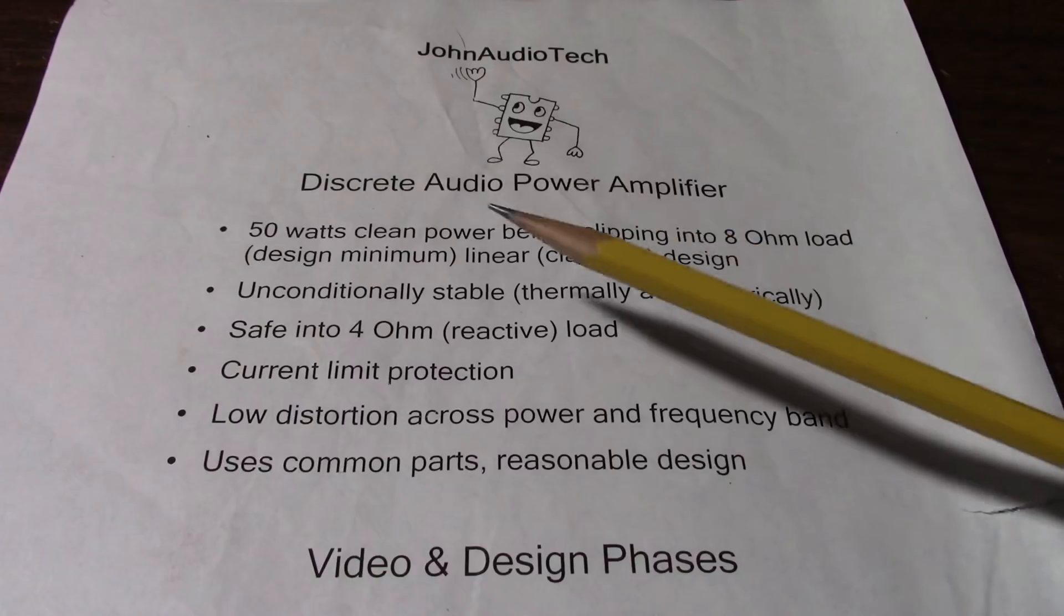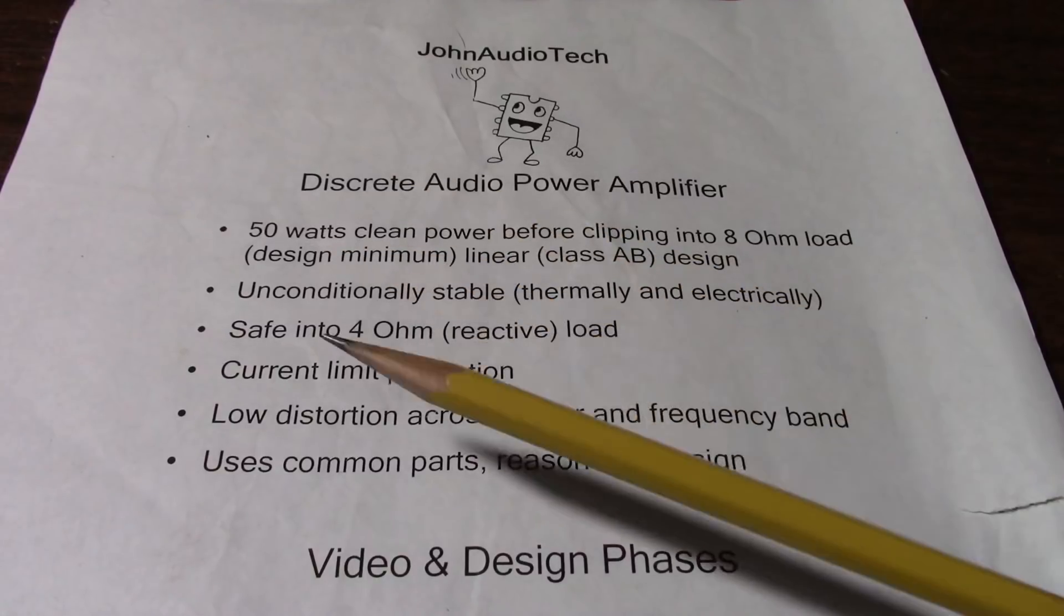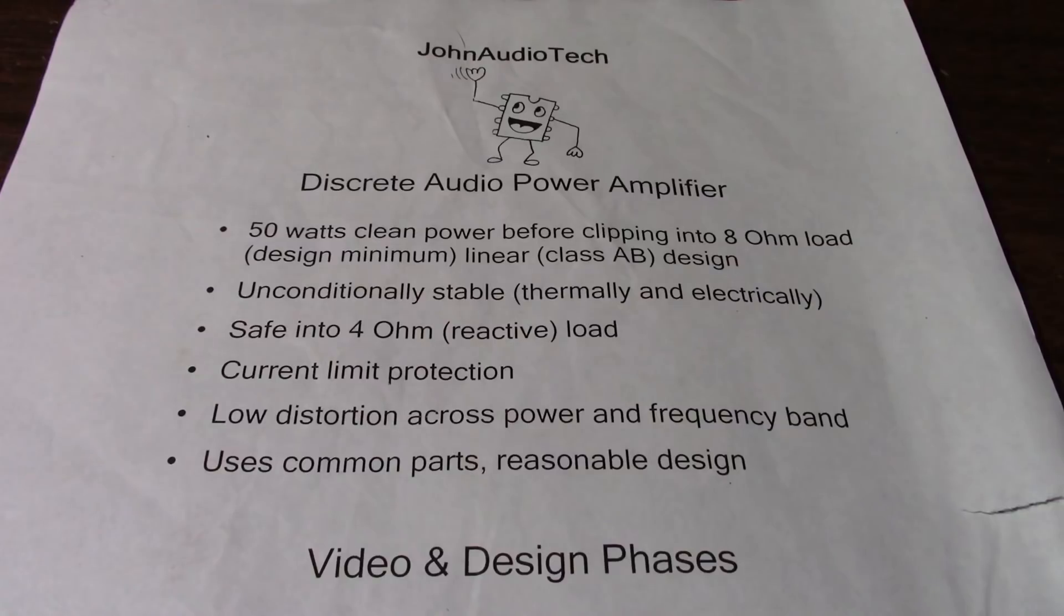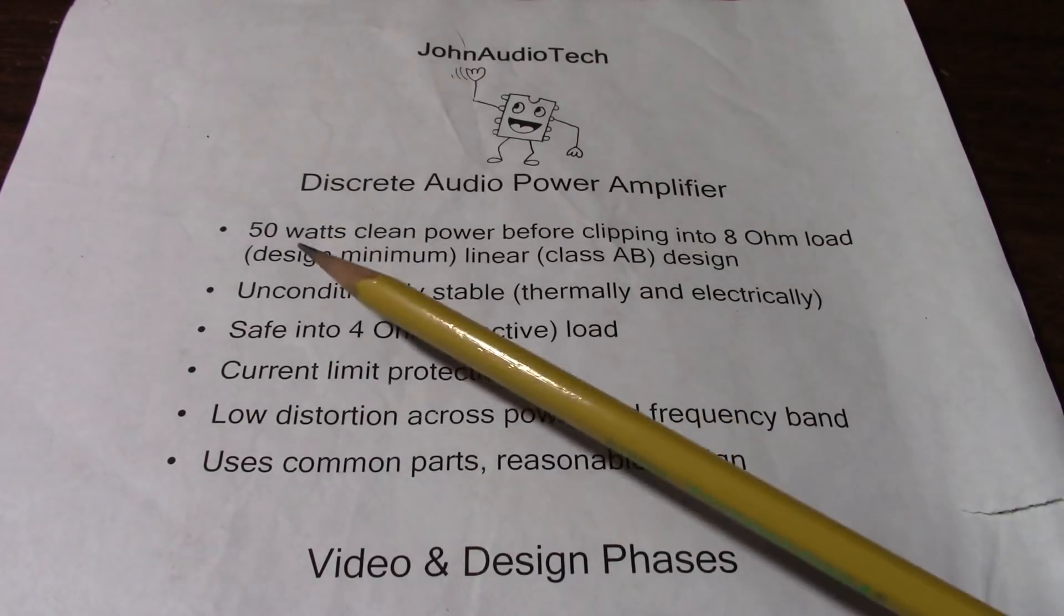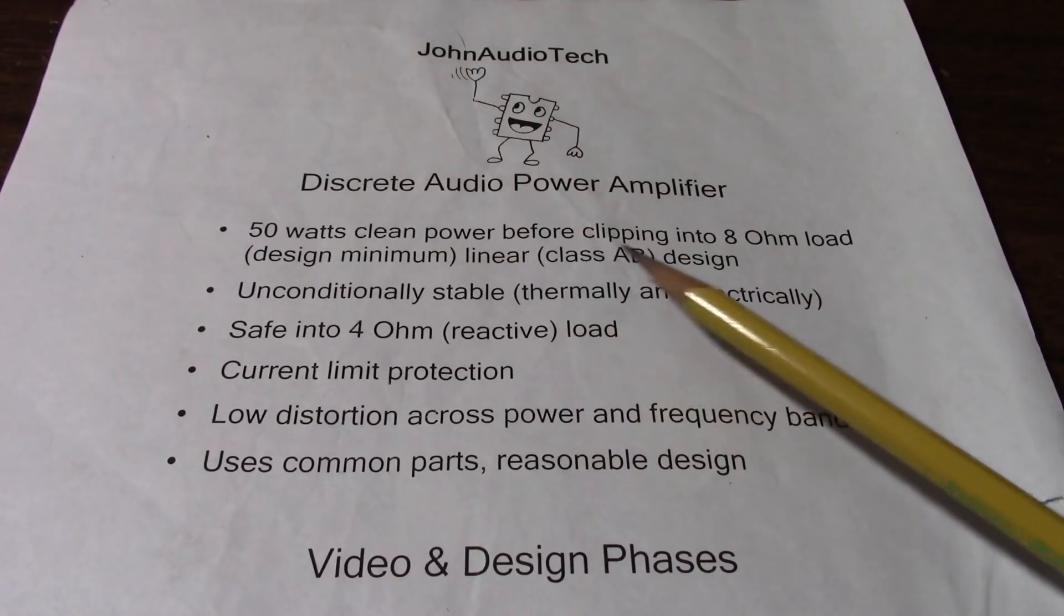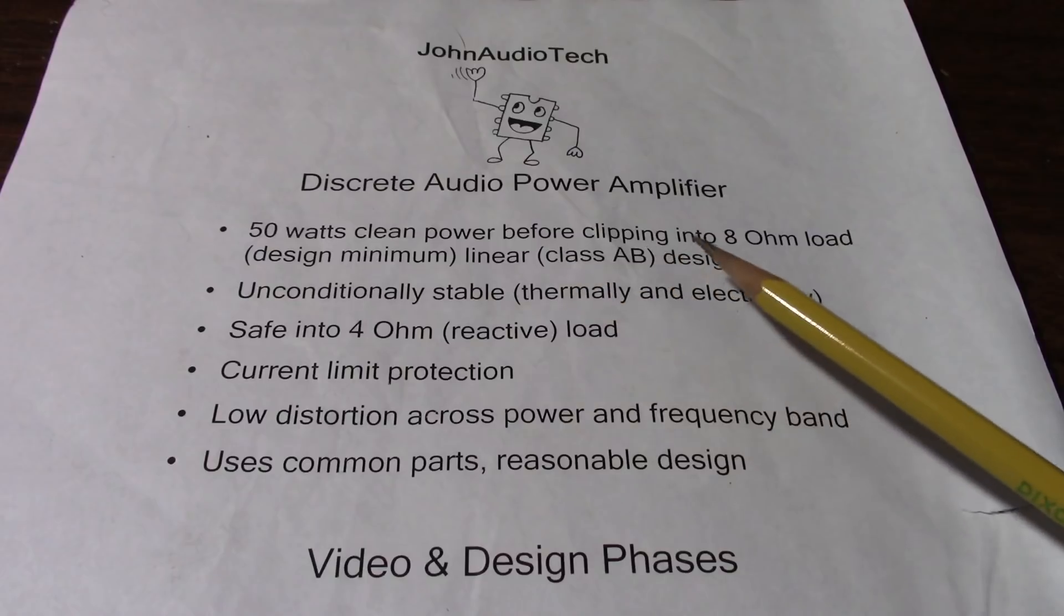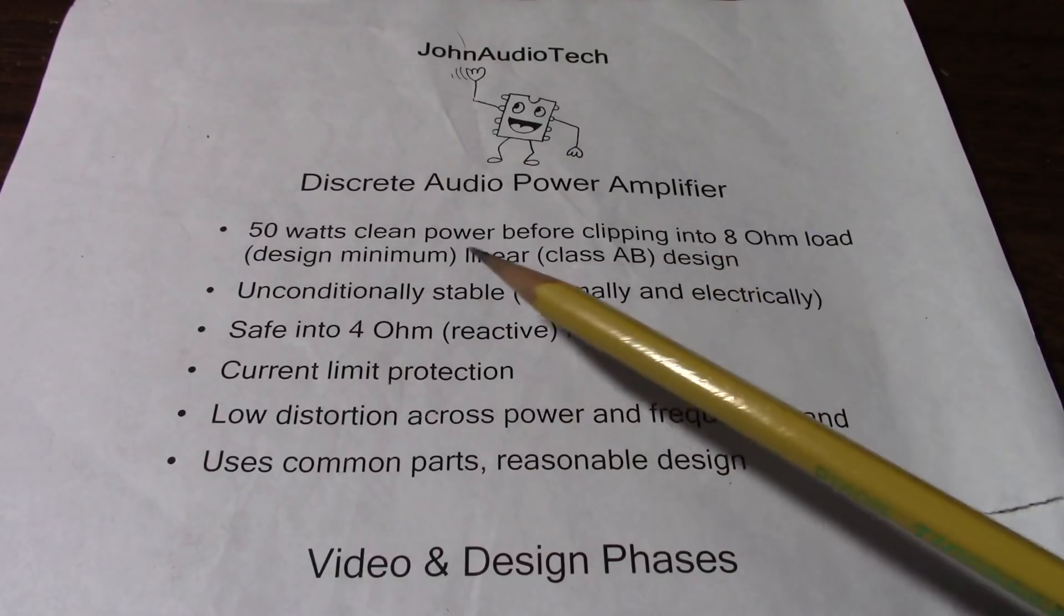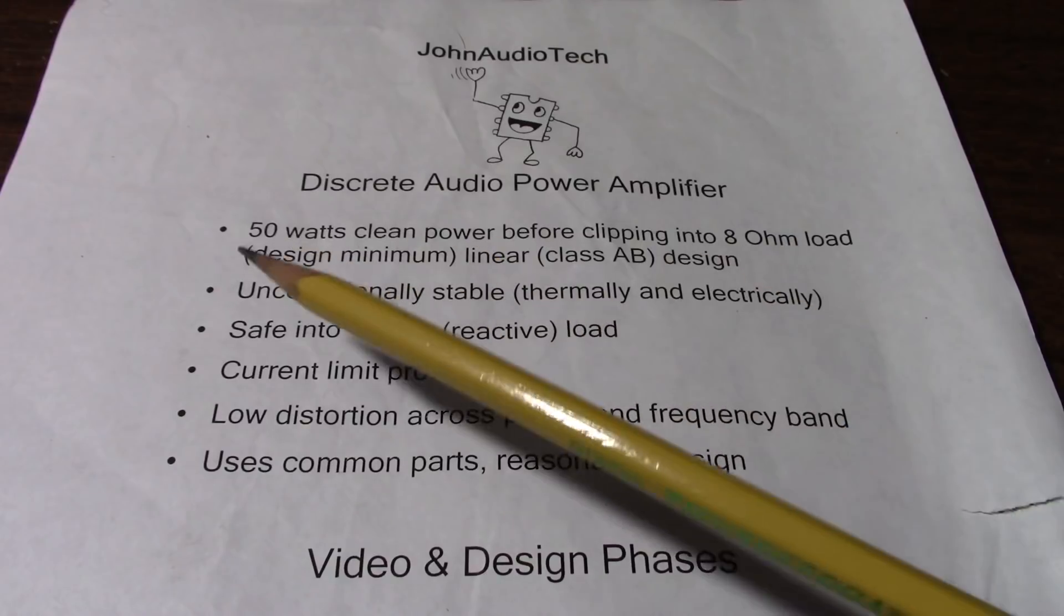Here's the page I printed off when I first started this project, the design goals I wanted to meet for making this amplifier. Let's see if I met those or not. First goal here was 50 watts of clean power before clipping into 8 ohm load, design minimum, linear class AB design. Of course it's a class AB design. Yeah, we met that pretty easily.